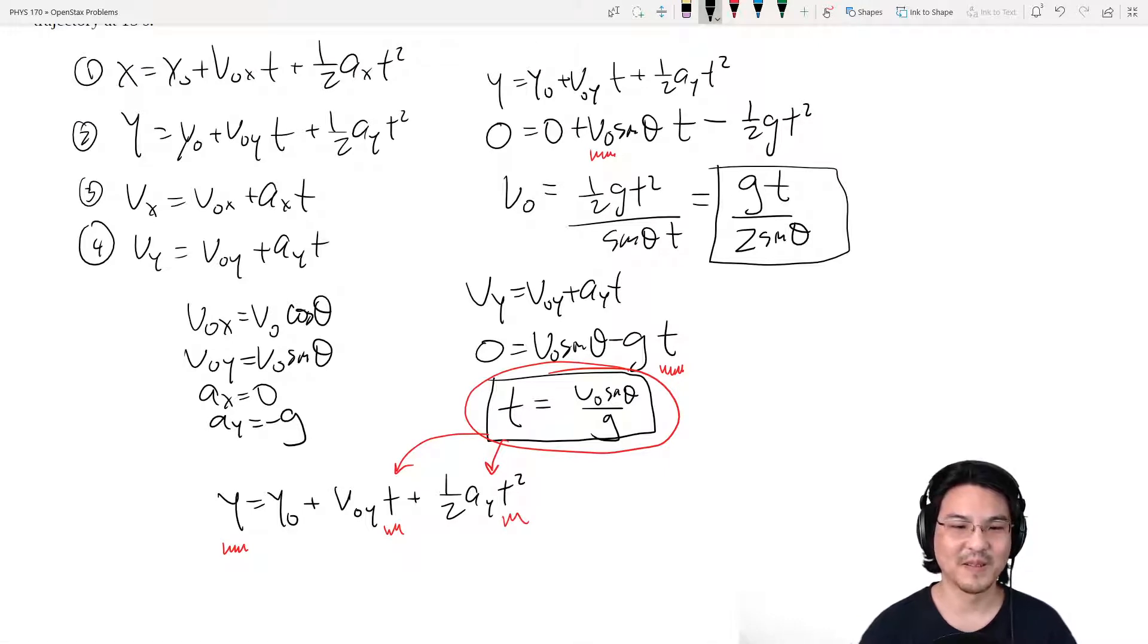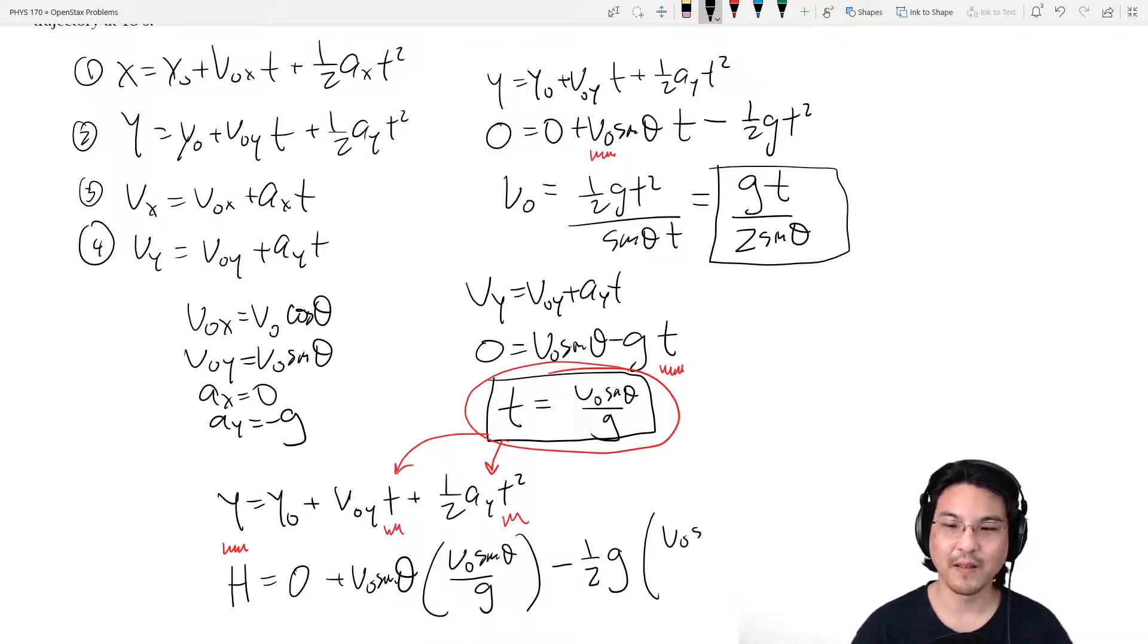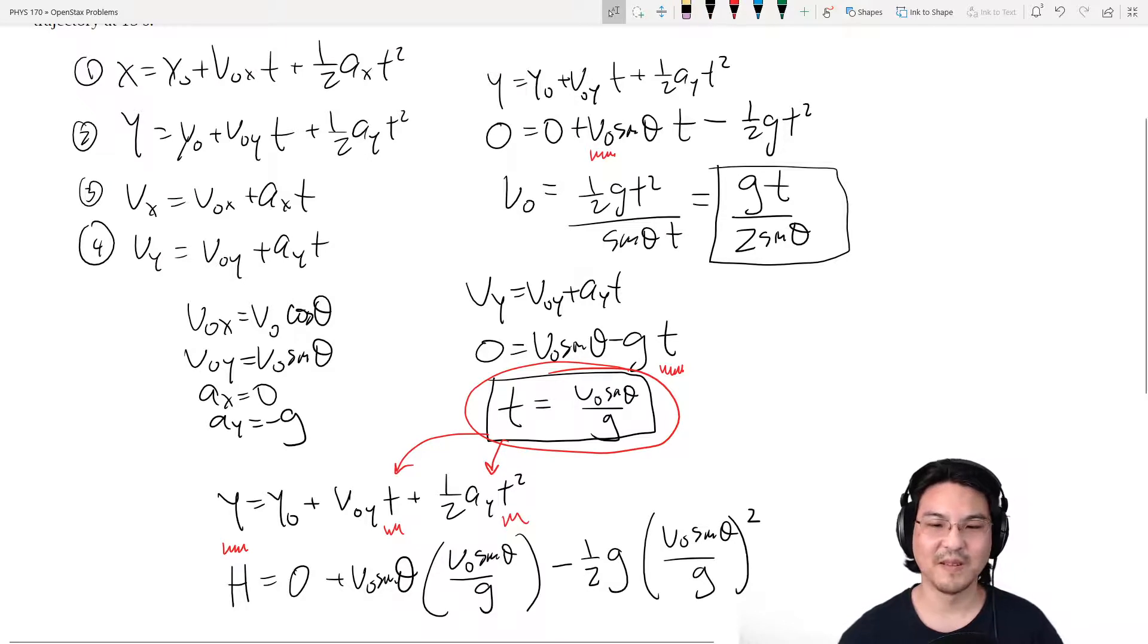So that means, let me just rewrite. This is that height. This is zero. V-naught sine theta. And this is our expression for t we just got earlier. I'll just put that right here. plus a y is negative g. To e squared. From right here. Squared.